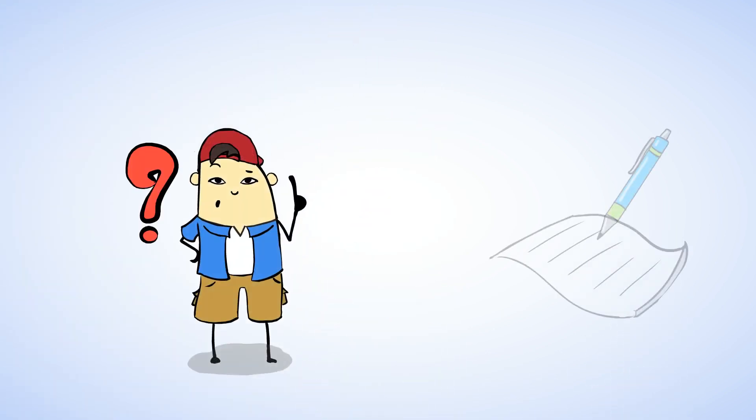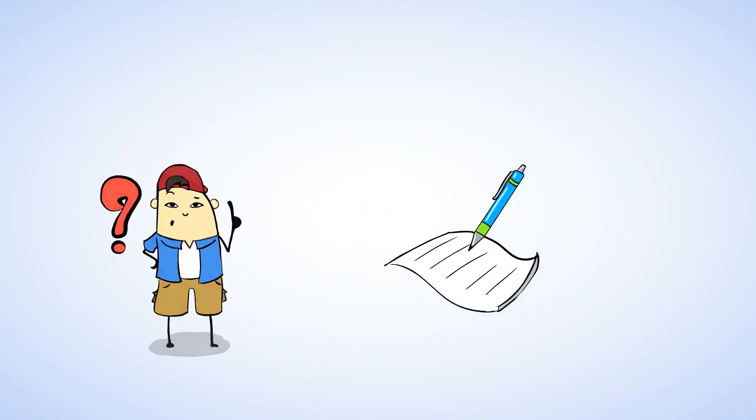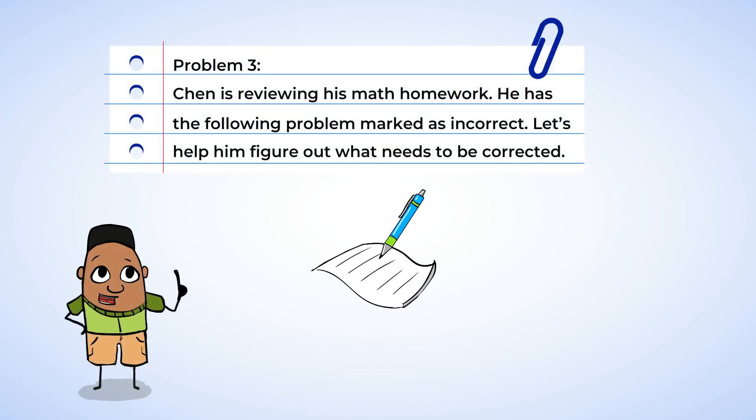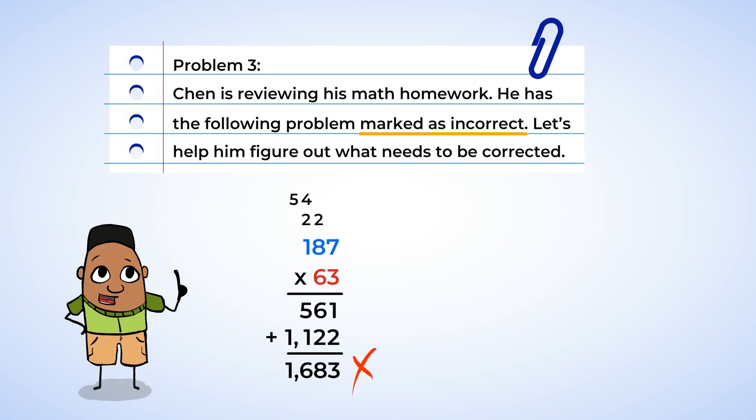What's Chen busy with? Looks like he's reviewing his math homework. Good on you, Chen. And he has the following problem marked as incorrect. Well, let's help him figure out what needs to be corrected.